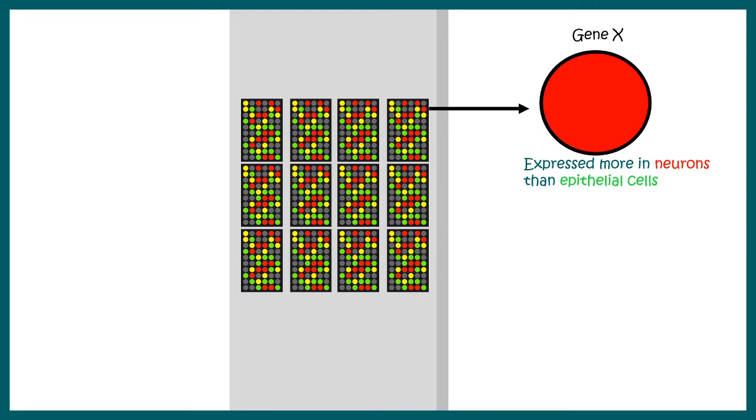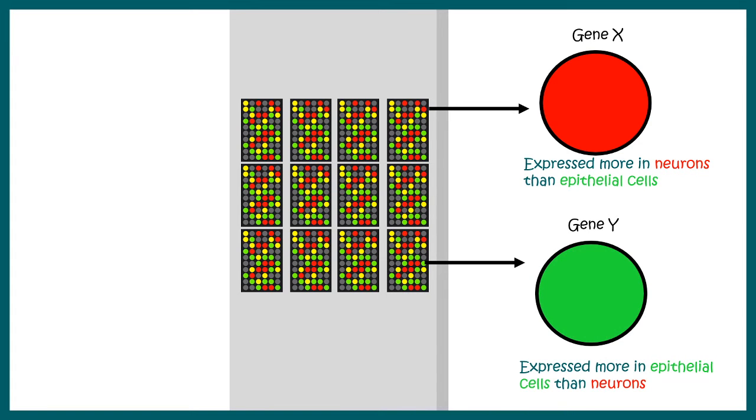Let us talk about three such spots. Here this spot corresponds to gene X. Here we can understand that gene X is expressed more in the neurons and less in the epithelial cells. Whereas gene Y is expressed more in the epithelial cells and less in the neurons. That is why the spot looks green. Whereas a yellow spot represents the expression levels are kind of similar in between these two cell types.